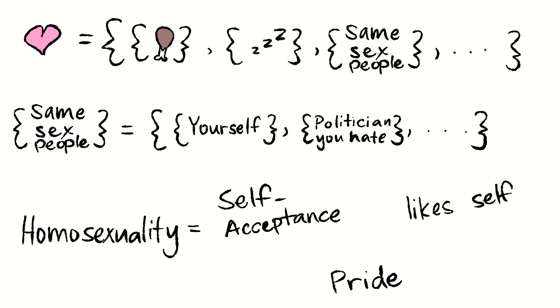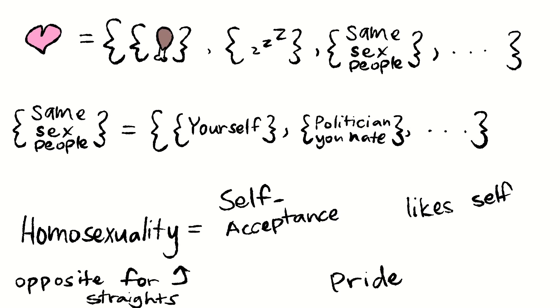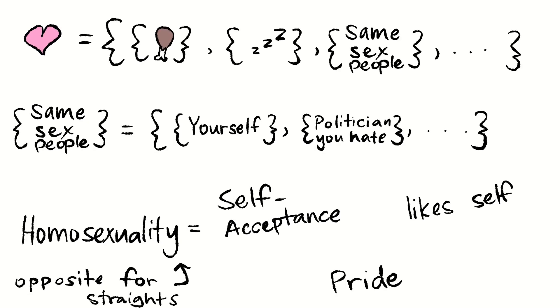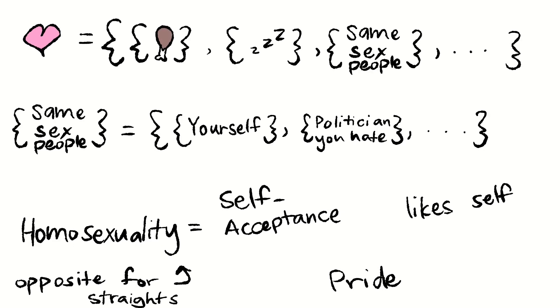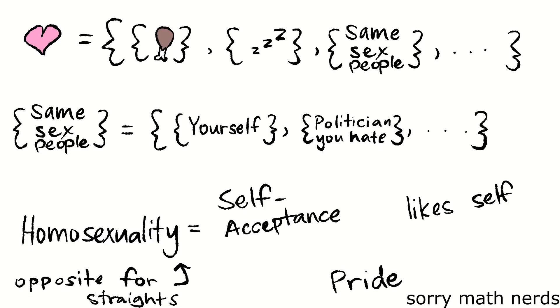They're self-confident, and they're proud of who they are. Of course, the reverse logic also applies to heterosexuals who don't like people of the same sex, which excludes them from the set of things they like, which means they don't like themselves. And we can prove that heterosexuals don't like themselves by using proof by induction.